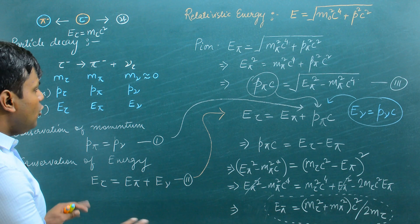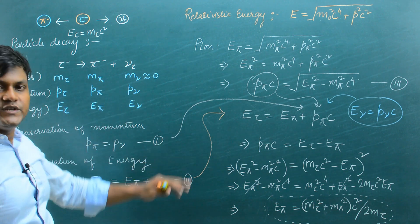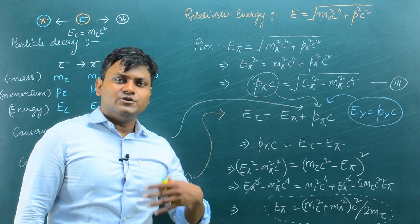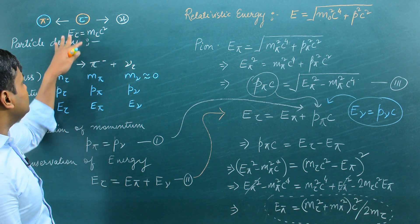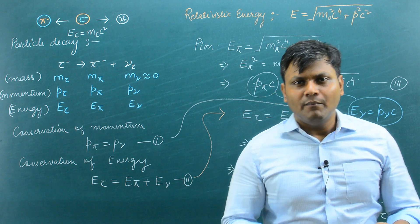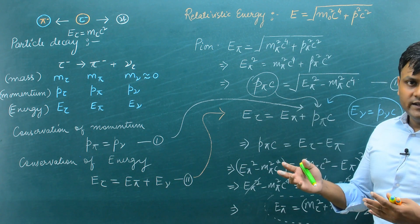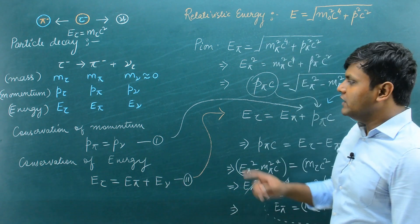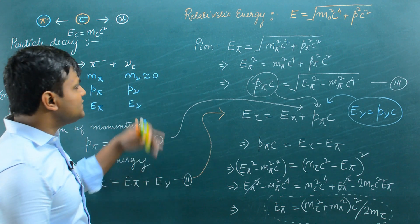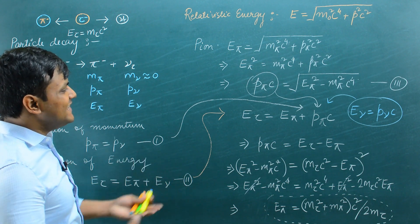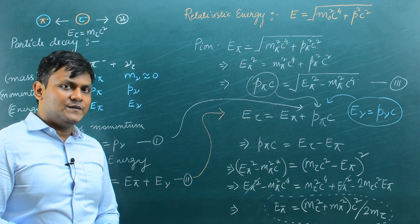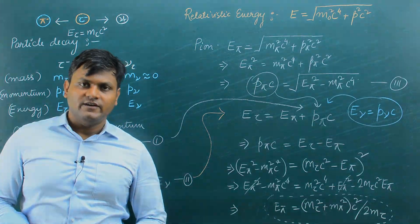What I hope I have demonstrated is that questions similar to this — which appear in various competitive examinations involving particle decay — ask you to find the velocity, energy, or mass of one of the particles. You can apply relativistic momentum, relativistic energy, conservation of momentum, conservation of energy, and the concept of massless particles, then perform the necessary substitutions to arrive at the answer. That is all for today. Thank you very much, have a nice day.